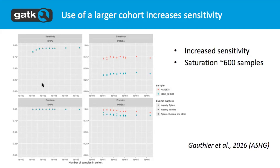For indels there is actually a slight decrease while SNPs increase. One thing to consider is that once you start mixing together different sequencing platforms, that could impact things. It doesn't necessarily mean any particular sample got less precision, but once we start adding samples sequenced using different capture kits, we see a drop in precision.